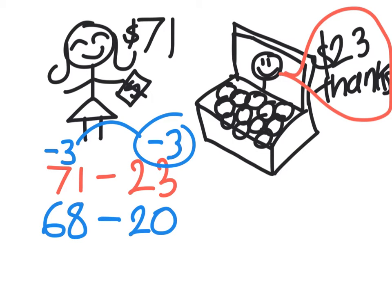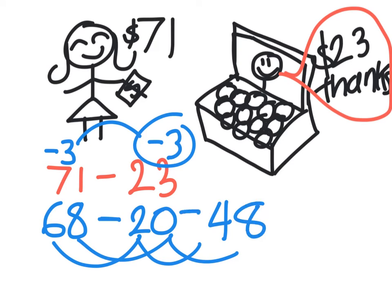Now 68 take away 20 is easy, because I know 6 take away 2 is 4, and 8 take away nothing is always going to be 8. So our answer is 48. That is how we use equal adjustments. If you're confused, you can go back and watch that again to see how I did it. But I'm going to move on to the key messages, and we'll do one more problem on the next slide.